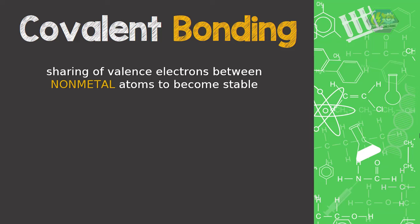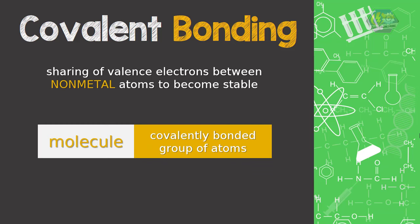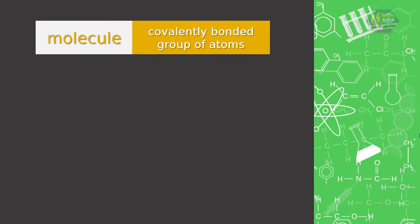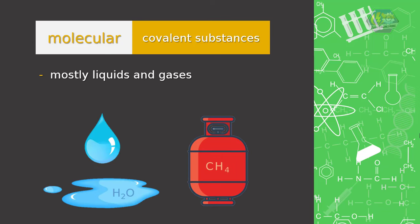In chemistry, the term molecule refers to the covalently bonded groups of atoms. Molecular covalent substances are mostly liquids and gases because the molecules have more freedom to move within the substance. Also, covalent compounds have low melting points and boiling points.